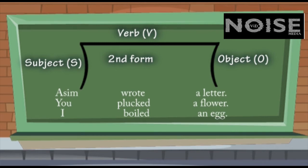In these sentences, the verbs write, pluck, and boil, they change into wrote, plucked, and boiled to show that these things, these actions took place in the past. Here, you should be careful in pronouncing certain verbs. Although they add ED in the past form, they are not pronounced ED, they are pronounced T. For example, it is not plucked, it is plucked.